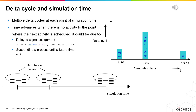A scheduled activity may also be the execution of a process at a future point in time. This is done by executing a wait for X nanoseconds statement. The wait for statement suspends the process until the simulator has advanced by the required time. Wait for statements are never used in RTL code — they are non-synthesizable — but are used in behavioral test benches and gate-level timing models.